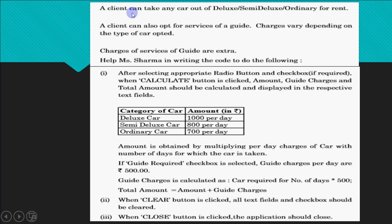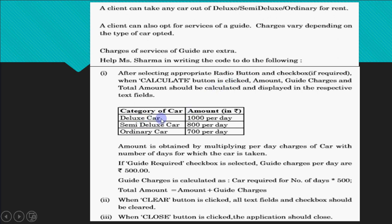A client can take any car out of three types for rent, and can also opt for the services of a guide. If the checkbox is ticked, the client has opted for services; if not ticked, they haven't. Charges vary by car type: if deluxe car is selected, charge is 1000 rupees per day; semi-deluxe is 800 per day; ordinary car is 700 per day.